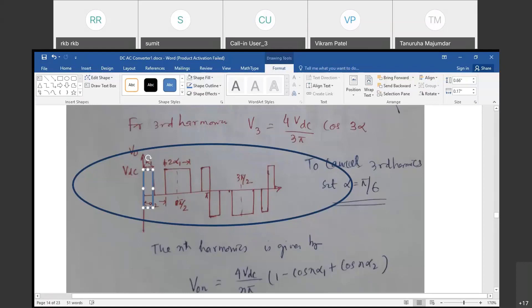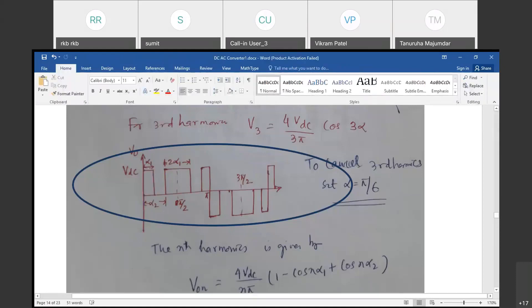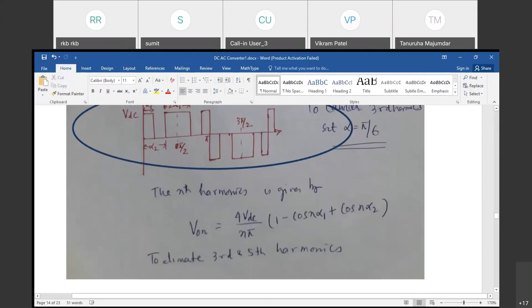You can see that because of this, the third and fifth harmony can be eliminated from this waveform. If it is a square wave, you create a notch. Notch means creating a pulse. The width you are controlling.